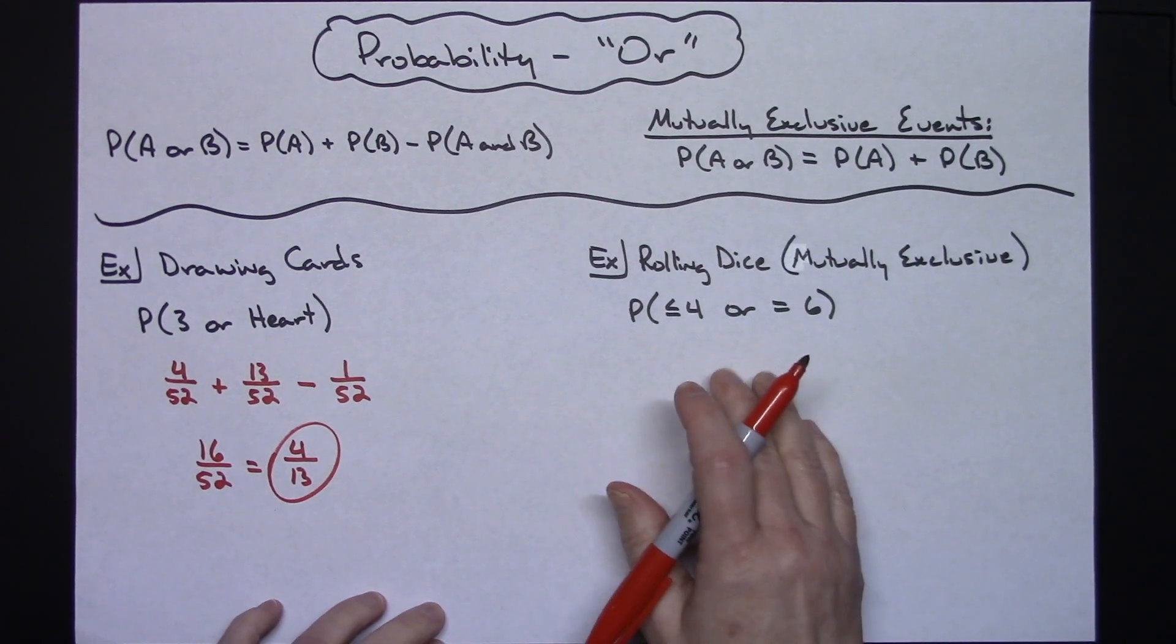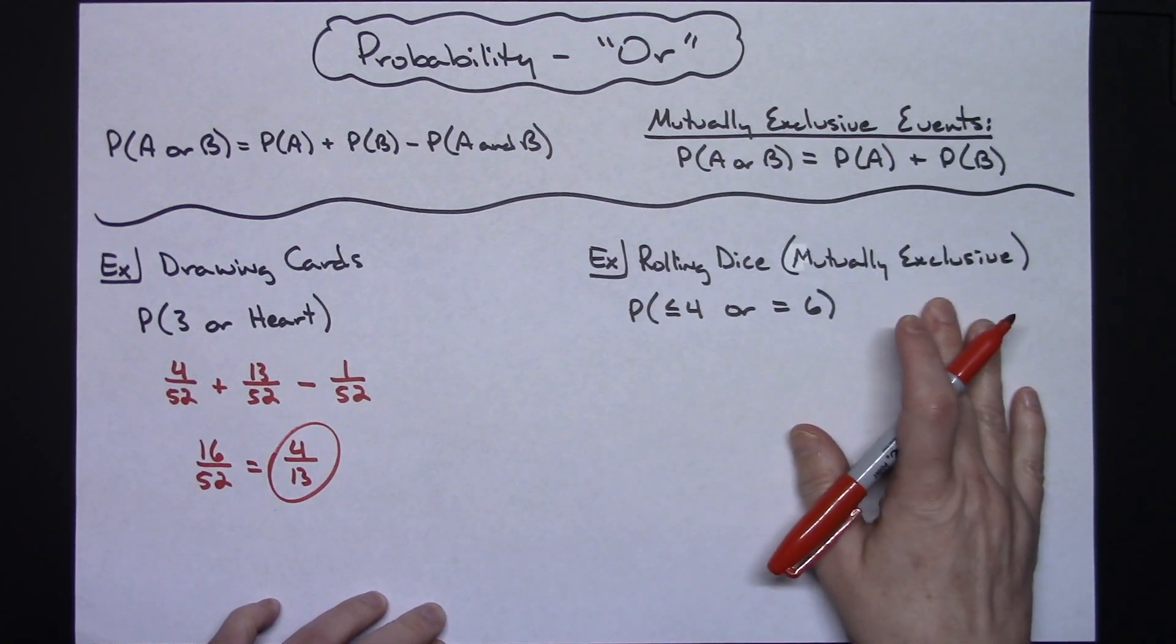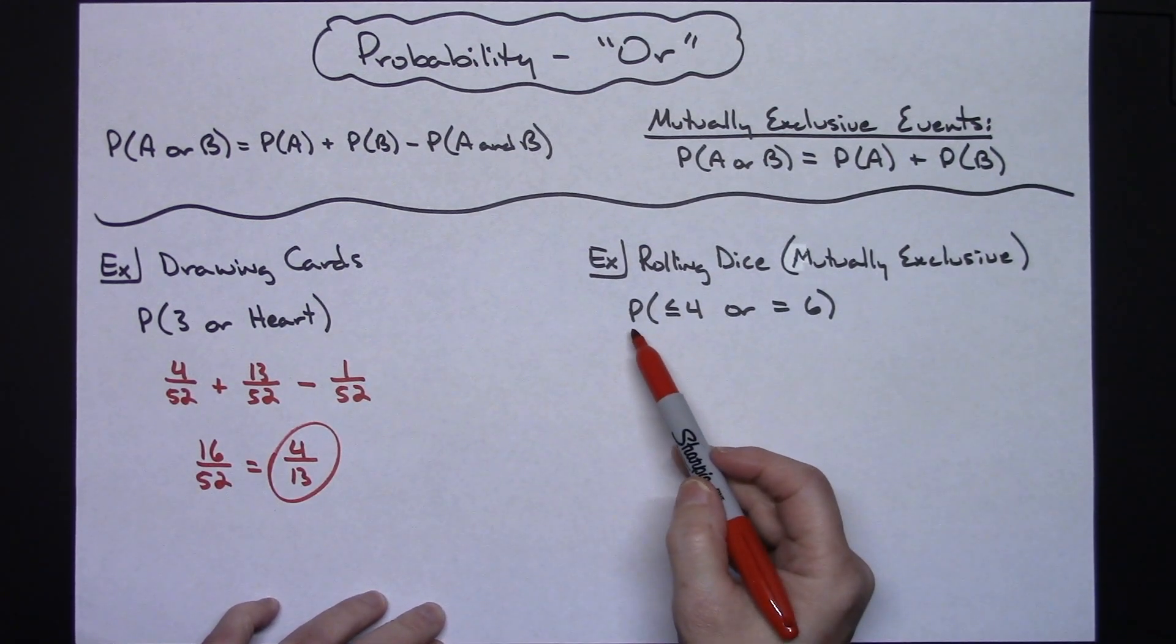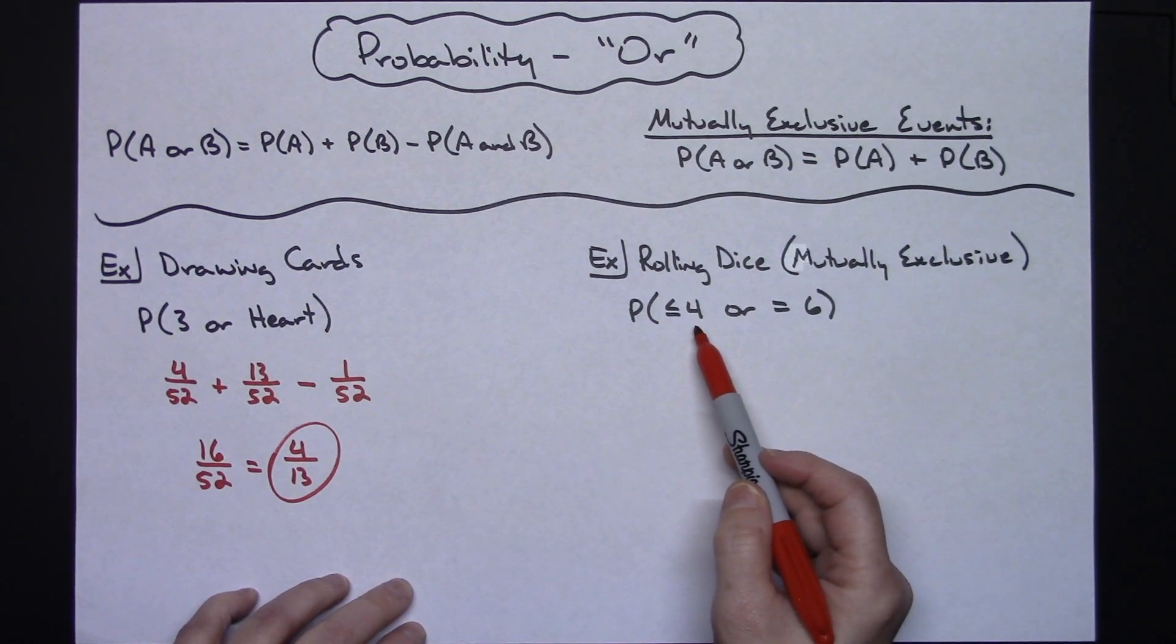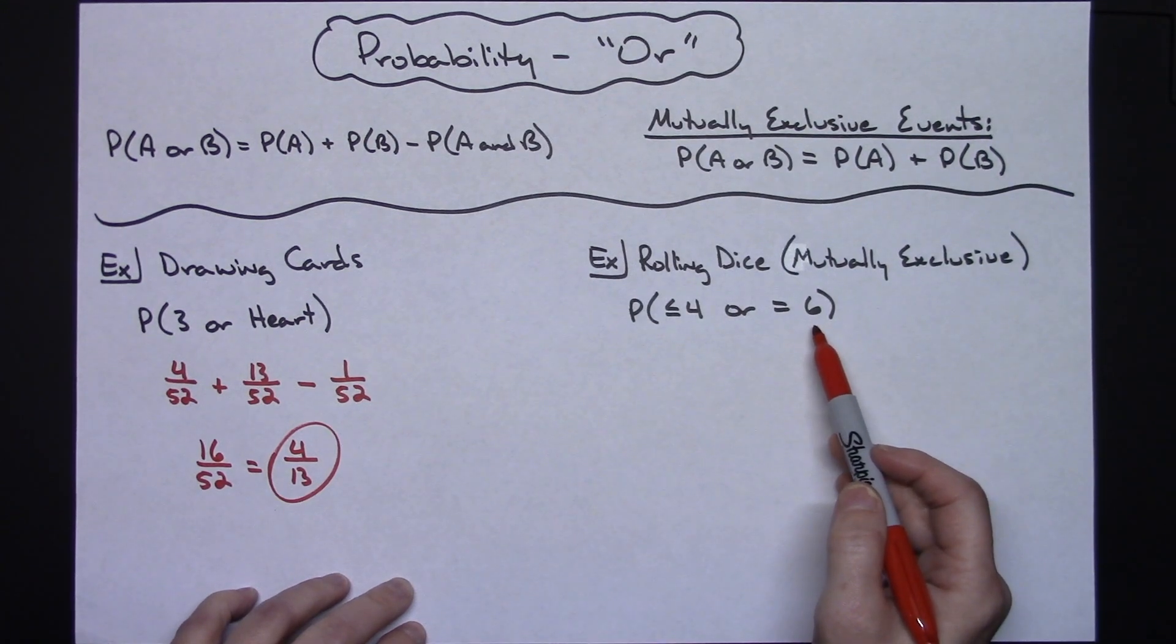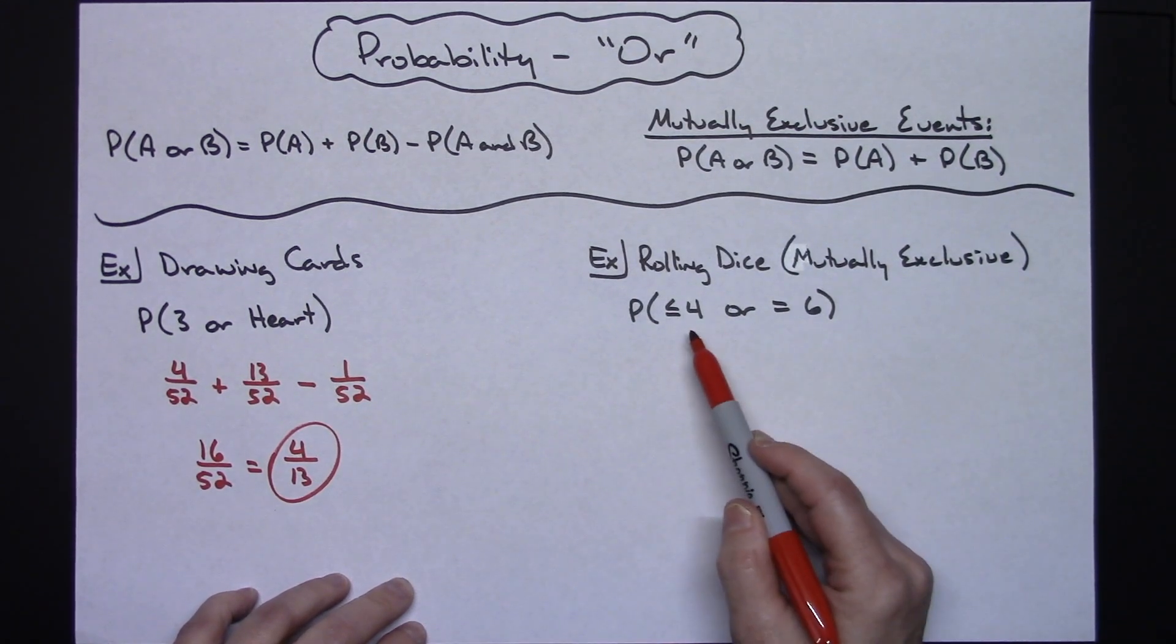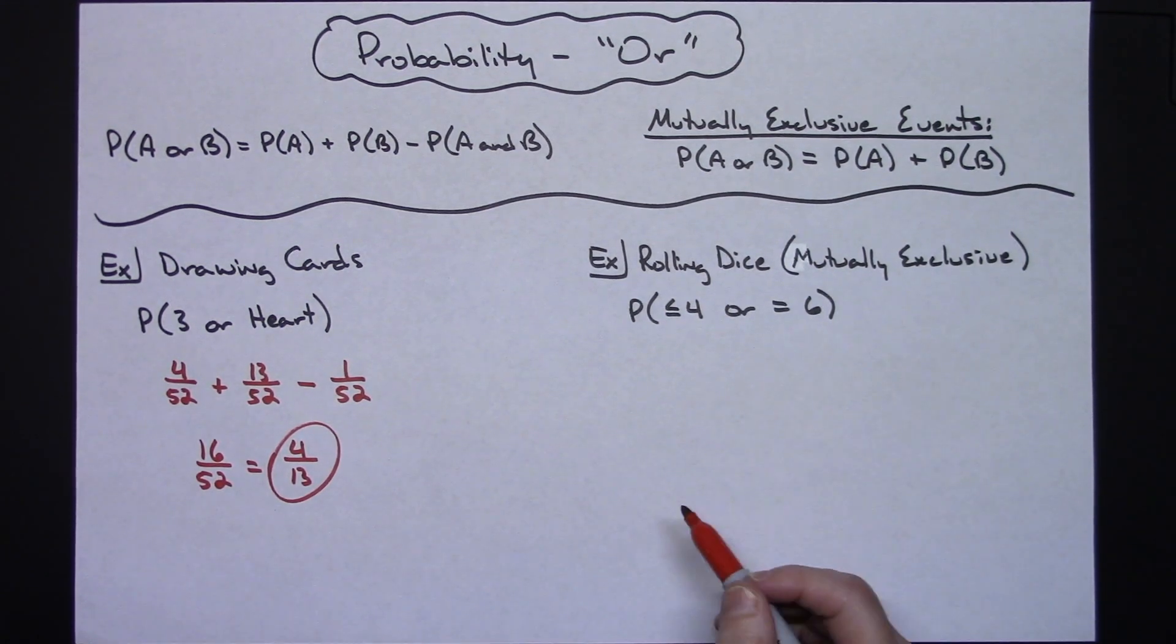Now taking a look at rolling dice, this particular example is going to be an example of mutually exclusive. Let's say we want the probability of rolling the dice and getting less than or equal to four or equal to six. They are mutually exclusive because I can't get a number less than or equal to four and equal to six at the same time.